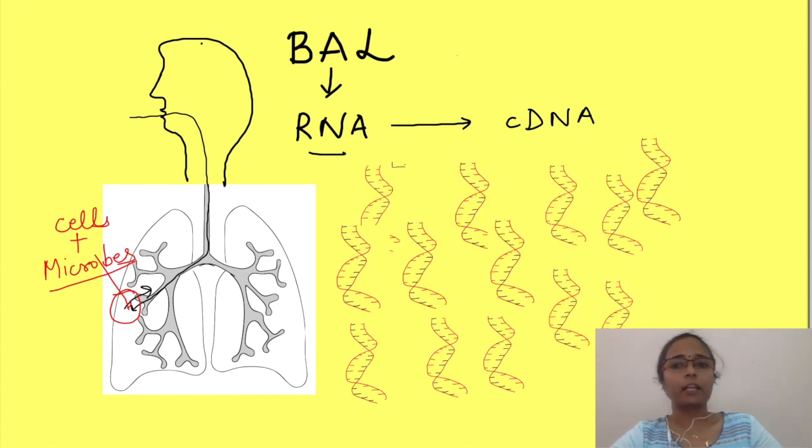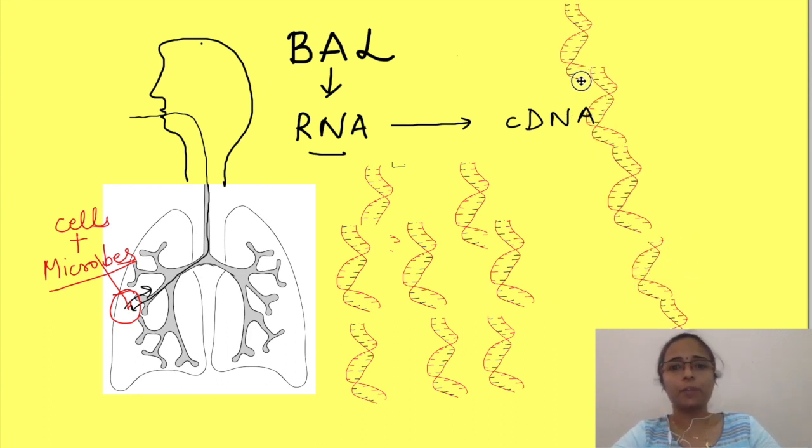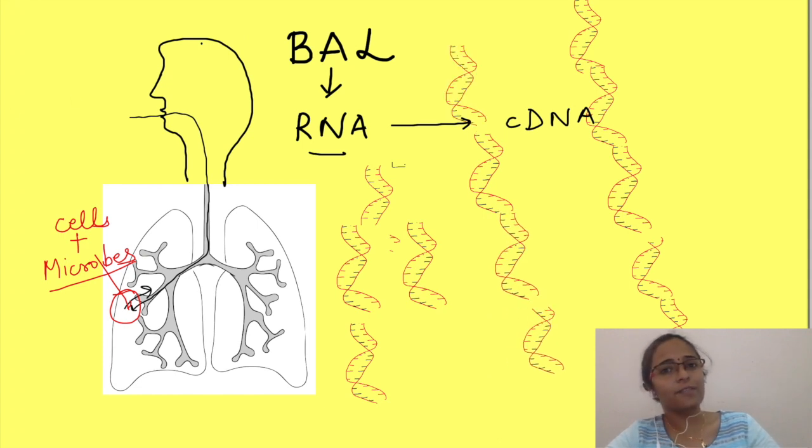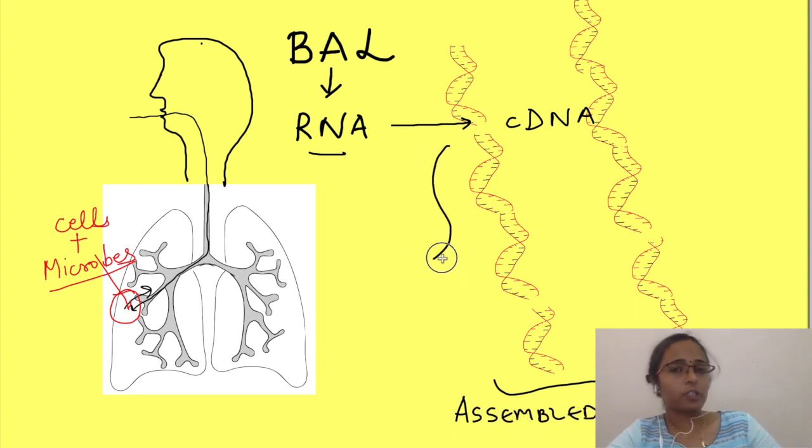After this is done there are algorithms which can arrange the short fragments of cDNA into representation of original chromosome. It itself is a very complex topic how that assembly of short segments of cDNA is made into a complete genome. So that is not the subject of this video.